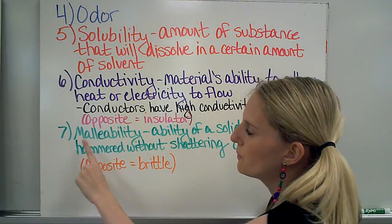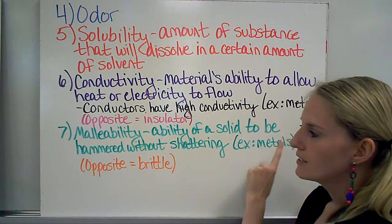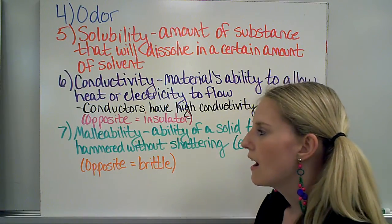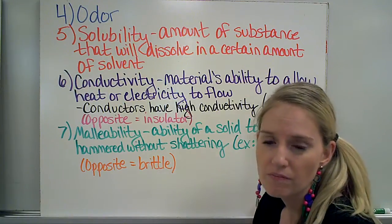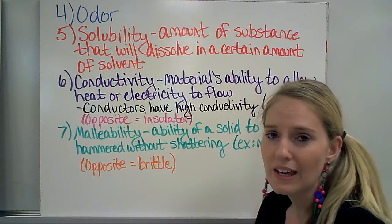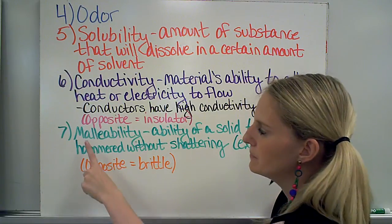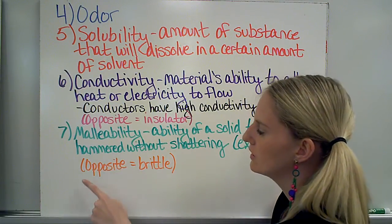Another physical property is malleability, which is the ability of a solid to be hammered without shattering. An example of this is metals. I can hit a metal with a hammer and it's not going to shatter into a million pieces. The opposite of a malleable material is called brittle.